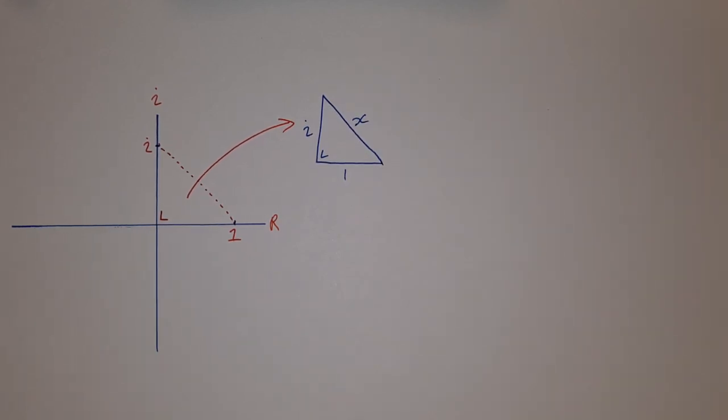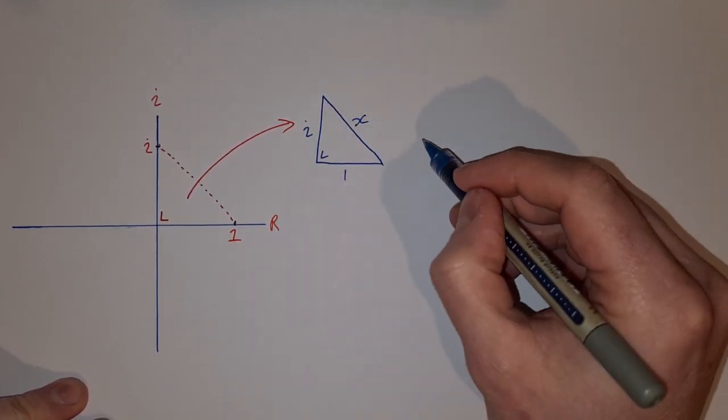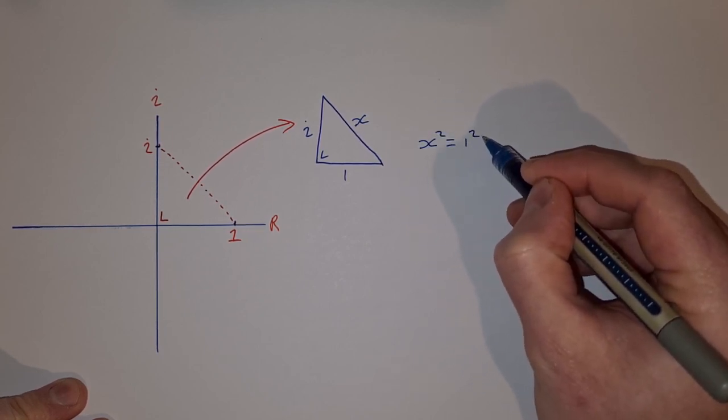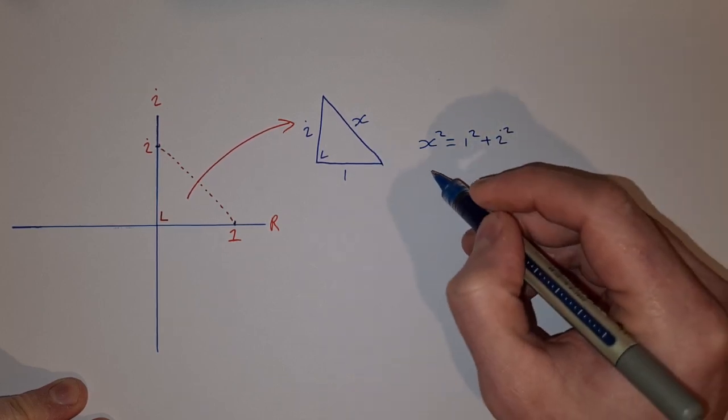Now let's take a look. We can use Pythagoras here to say x squared is equal to one squared plus i squared. Then we take the square root of both sides, so square root of x squared is x and then the square root of one squared plus i squared.